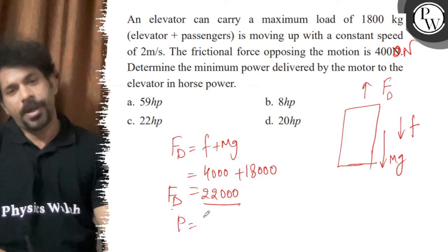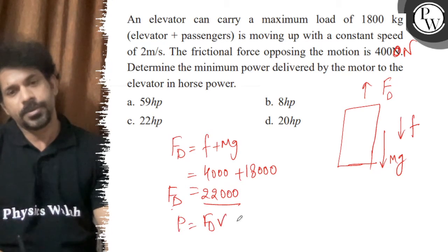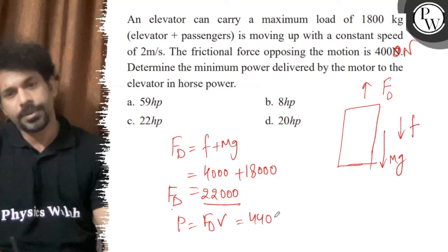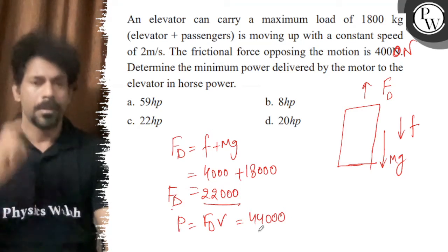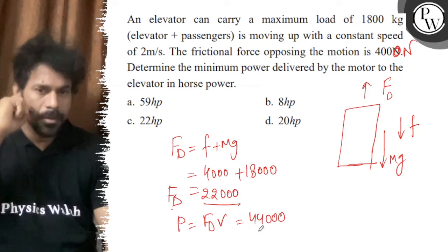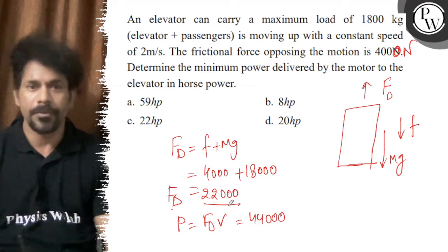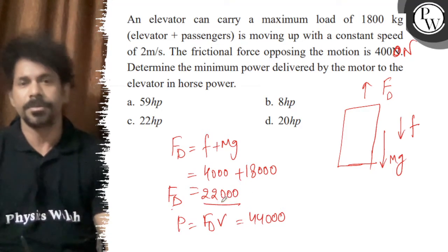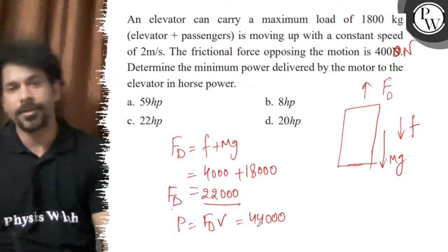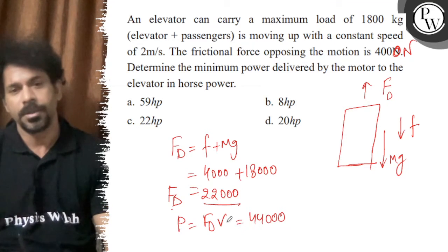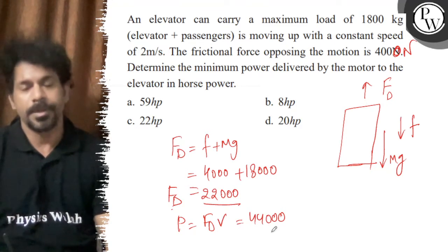Power equals F_driving dot v, so that will be 22000 times 2, which equals 44000 watts.